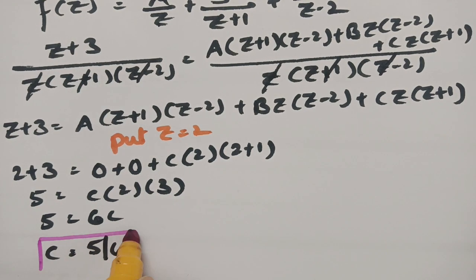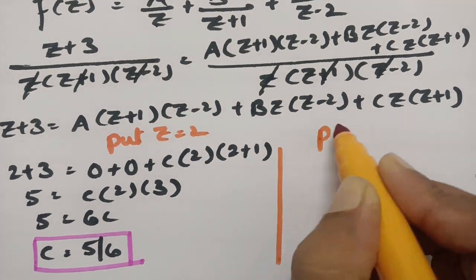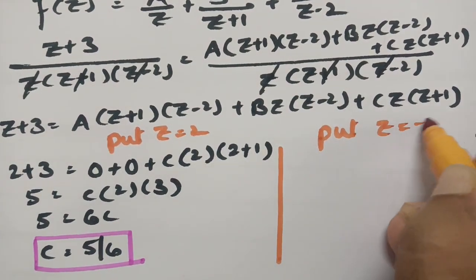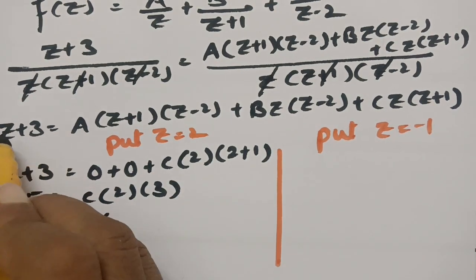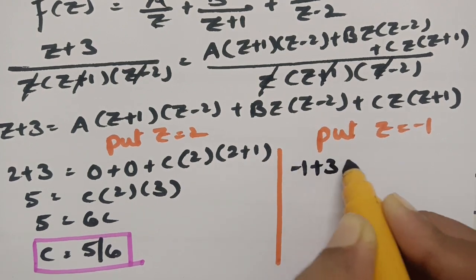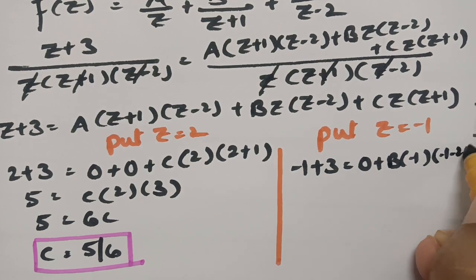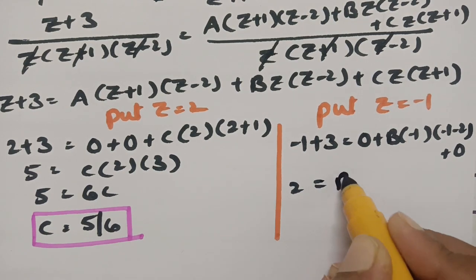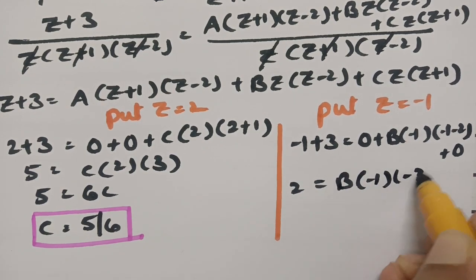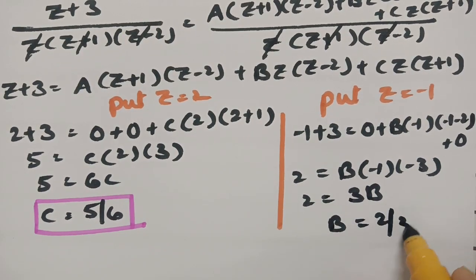Next, put z = -1 to find B. The A and C terms become 0, and we get -1+3 = B·(-1)·(-1-2), so 2 = B·(-1)·(-3) = 3B, giving B = 2/3.